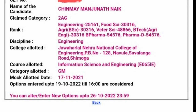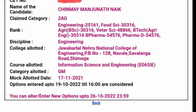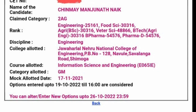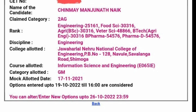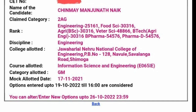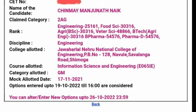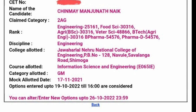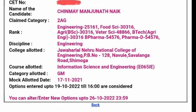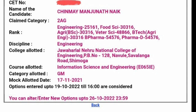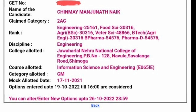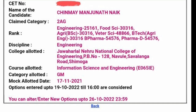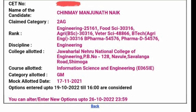For veterinary, engineering, or any other course, the rank and course alert point is important. The main important thing is to correctly note your category allotment. The categories are: GM, GMR, 3A, 3B, 2A, 2B, SC, and ST. That is why we have a seat allotment for each category.